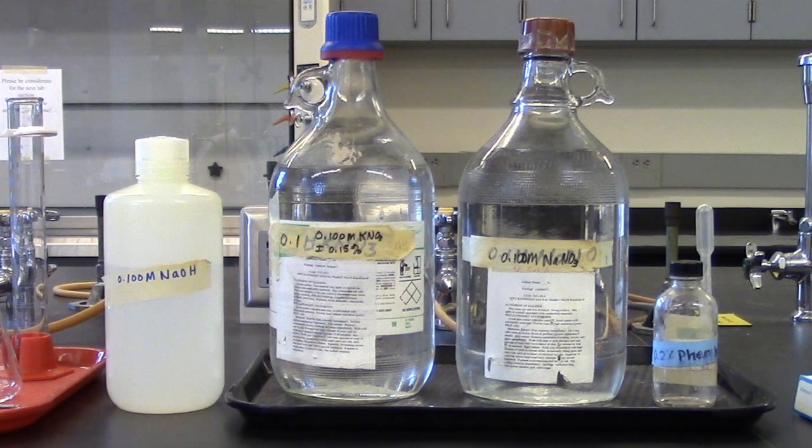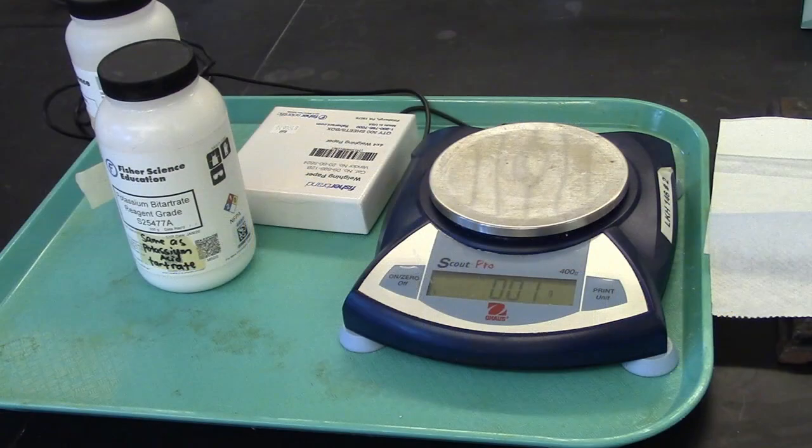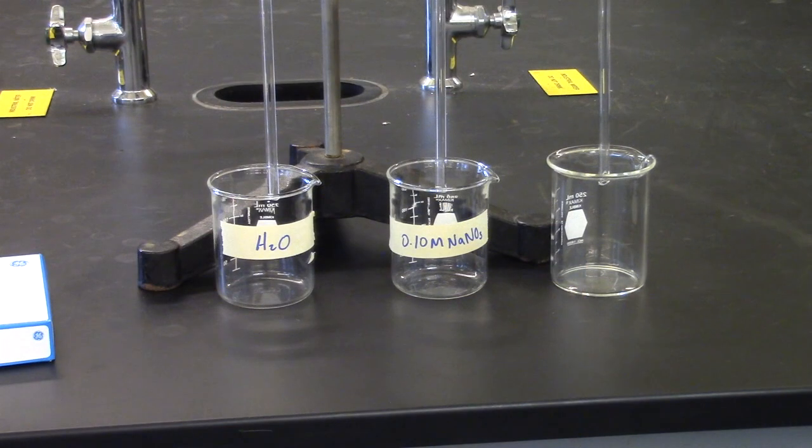You will use the following solutions: 0.1 molar NaOH, 0.1 molar potassium nitrate, 0.1 molar sodium nitrate, and 0.2 percent phenolphthalein. You will use a single pan balance and weighing paper to weigh out your sample.